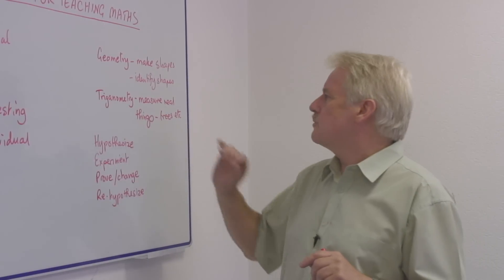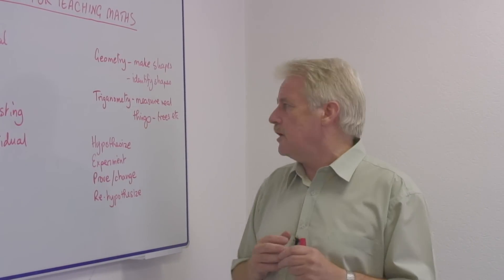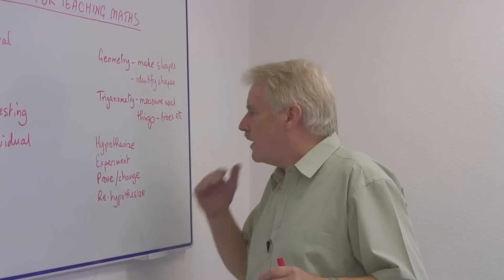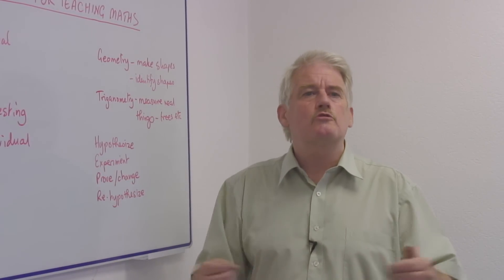And in trigonometry, if we're going to measure things and use trigonometry, then we should use it properly. We should go outside, we should find trees, and we should measure the trees from the ground, and we should use real rulers.